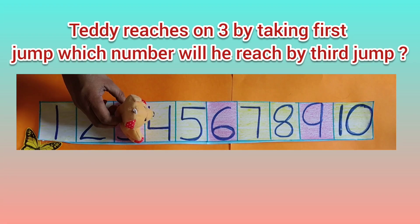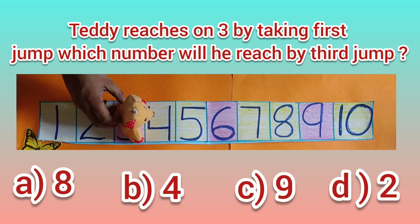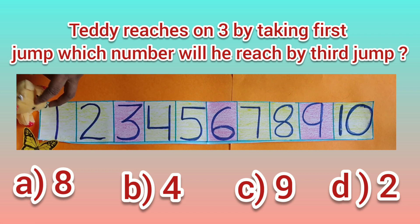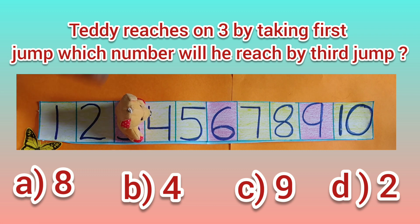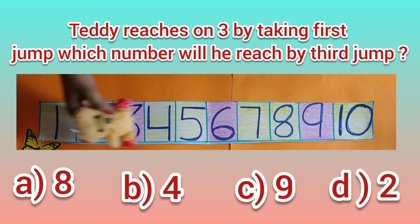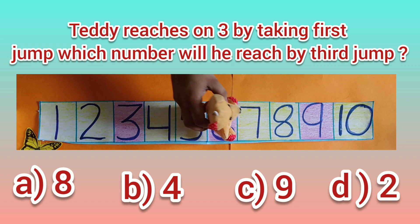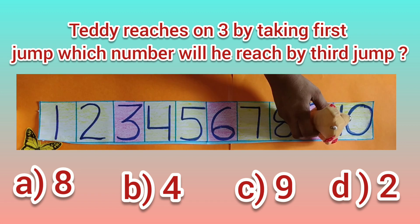Teddy reaches 3 by taking the 1st jump. Which number will he reach by the 3rd jump? Let's see the options. A) 8, B) 4, C) 9, D) 2. Teddy first lands on 3, second on 6, and third on 9. So the correct option is C. We put a tick on C.